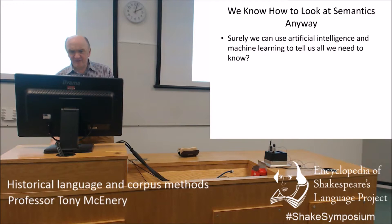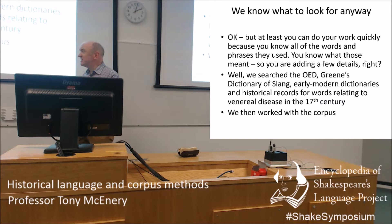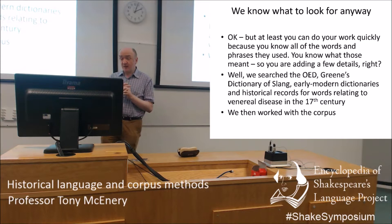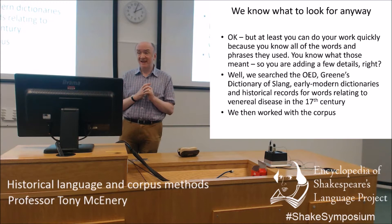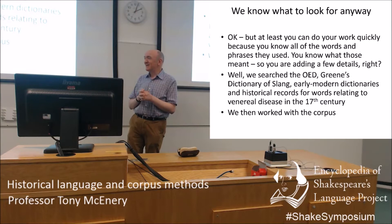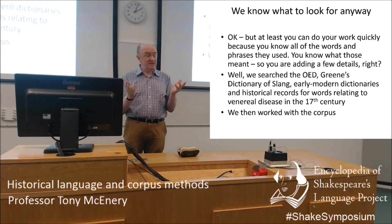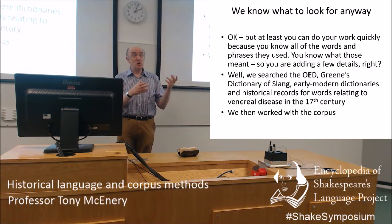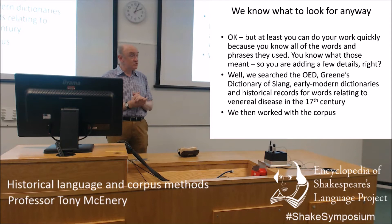We need to know what to look for anyway. Somebody might say, you're building a dictionary of sorts — why are you bothering? We have wonderful dictionaries out there. We know which words to look up and what they mean. Well, you can certainly look words up. We looked in the OED, in Green's Dictionary of Slang, in early modern dictionaries, and some of you are aware of LEME — the Lexicons of Early Modern English online, wonderful 17th century dictionaries. We also looked in historical records, going to British History Online for historical documents. You can build up quite a good list of words and also look at the historical thesaurus.